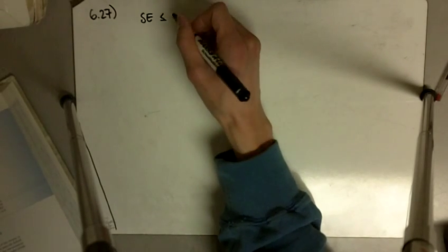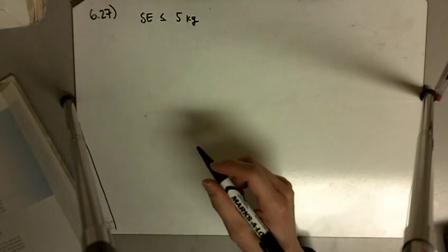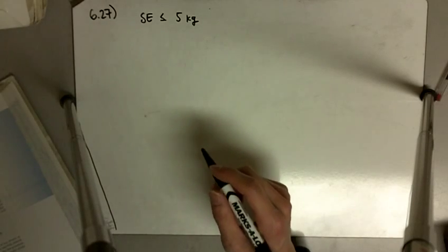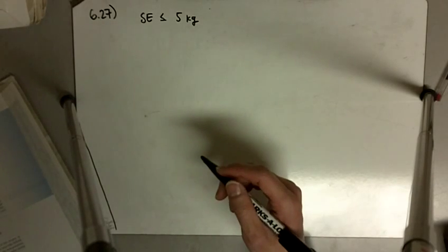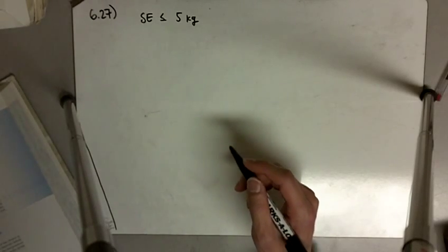So the standard error should not be over 5 kilograms. It says if the population standard deviation is guessed to be about 20 kilograms, how many cattle should be put on the diet in order to achieve a sufficiently small standard error?